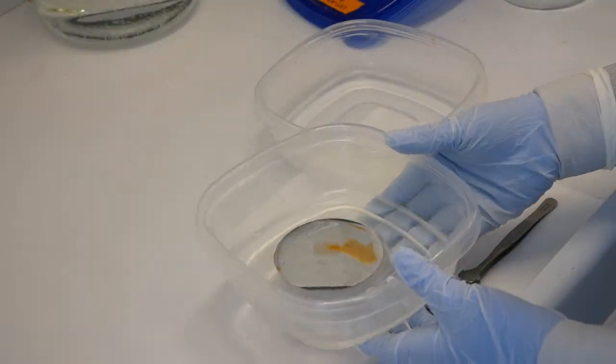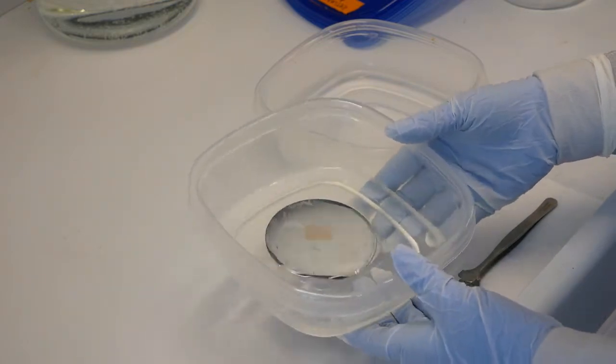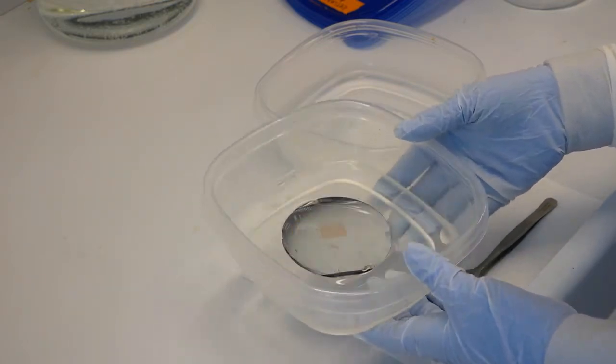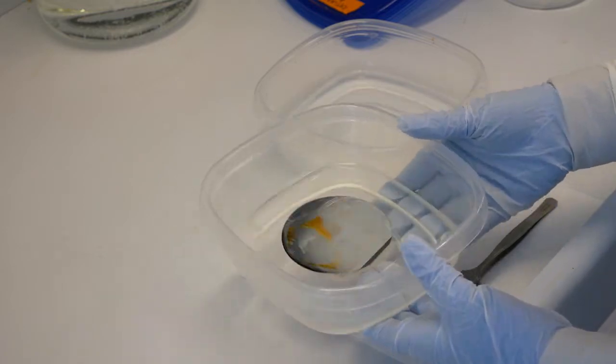Most other materials can be etched in the same way, just by choosing the right chemical. For example, here we etch aluminum patterned with photoresist using a mixture of phosphoric, acetic, and nitric acids.